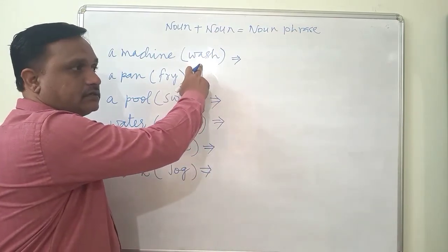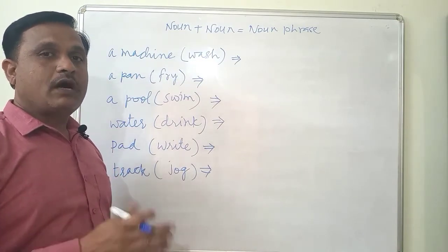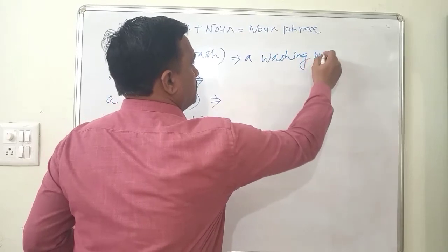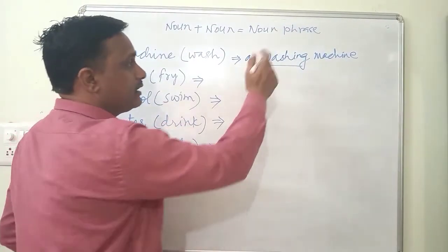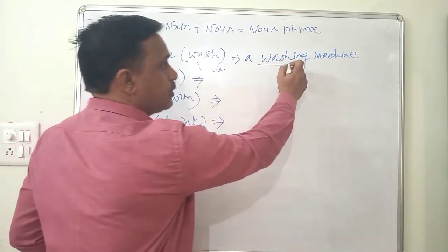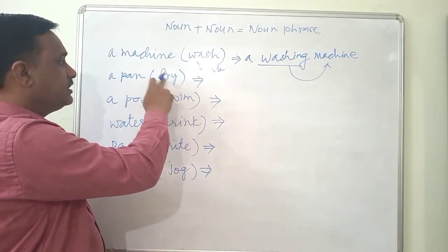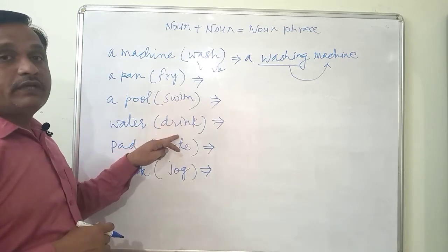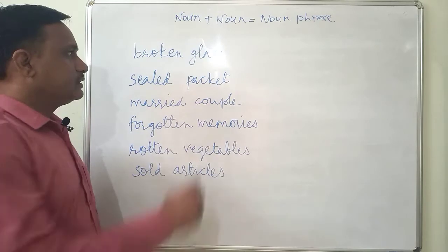A machine used to wash clothes is called a washing machine. We add '-ing' to the verb 'wash', making it a noun that qualifies another noun. By adding '-ing' to verbs we can form nouns which qualify other nouns: a washing machine, a frying pan, a swimming pool, drinking water, a writing pad, a jogging track.